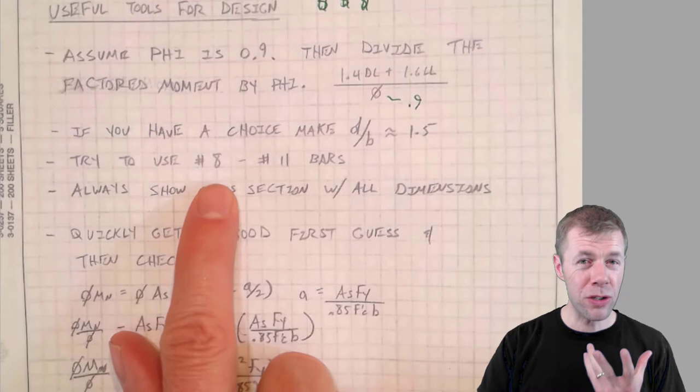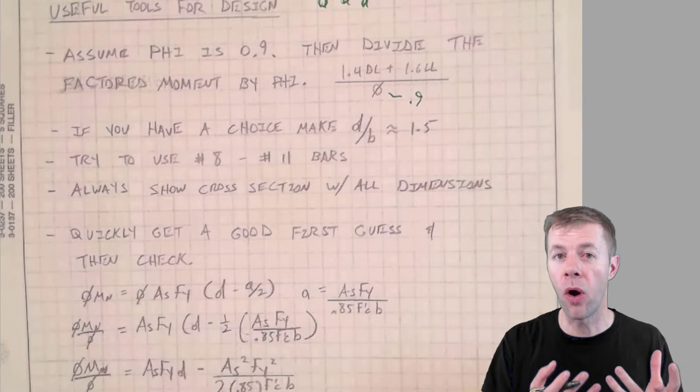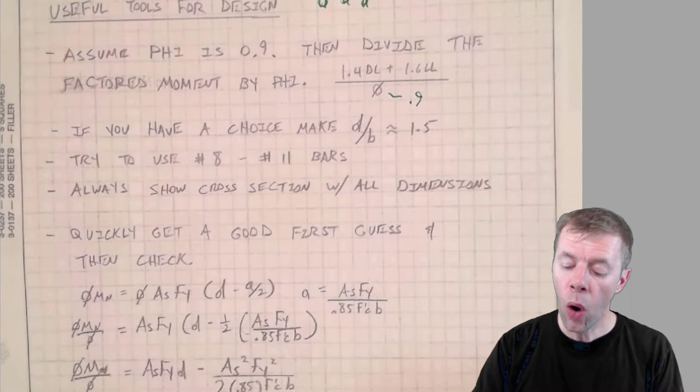A lot of times in a reinforced concrete structure, you'll pick like one size bar—almost always one size bar for the longitudinal steel—and you'll use it throughout. There's a big tip for you.